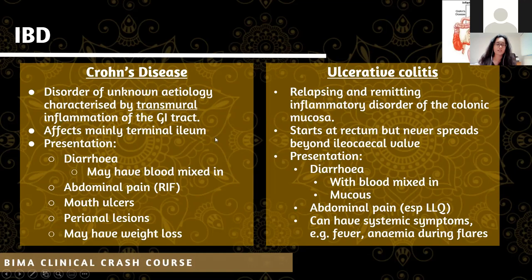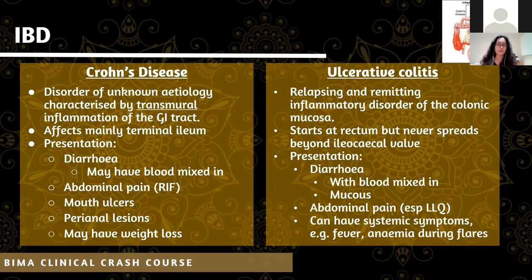Crohn's typically affects the terminal ileum - that's why the man in the first question had pain on the right side, while the female with ulcerative colitis had abdominal pain on the left side. In Crohn's you get diarrhoea and it may have blood mixed in, but just because there's blood in the diarrhoea, don't automatically think ulcerative colitis. In UC you get diarrhoea with blood and it can also have mucus in it.